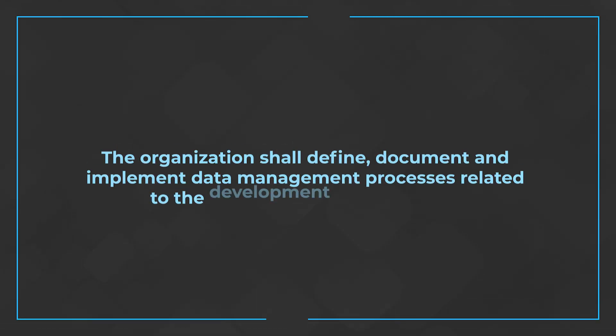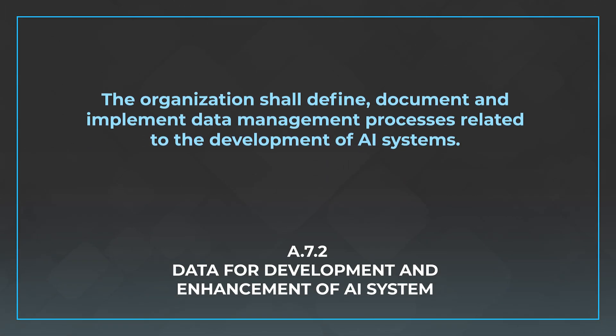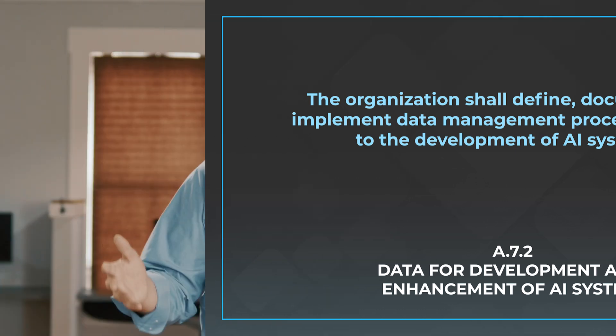The first control is A.7.2, Data for Development and Enhancement of AI System. This control is concerned with the data that you're using in that design and build phase. The control states the organization shall define, document, and implement data management processes related to the development of AI systems. So you need to define how data needs to be handled when you're using it to build AI systems.